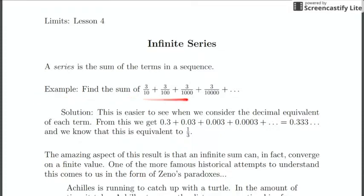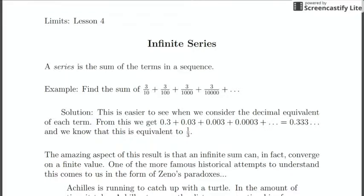Just as an example, let's talk about the sum of 3 tenths plus 3 one-hundredths plus 3 one-thousandths, and so on, where the dot, dot, dot means this is going on infinitely. The common ratio here is going to be one-tenth. It's a lot easier to see when we consider the decimal equivalent: three-tenths is 0.3, three-one-hundredths is 0.03, three-thousandths is 0.003. When you add all of these together, we get 0.3 repeating, which is equivalent to one-third.